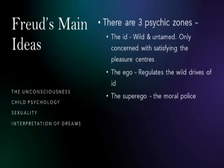Freud's main ideas focused on: the unconscious, child psychology, sexuality, and the interpretation of dreams. According to Freud, in our mind or psyche there are three psychic zones. The id, which is wild and untamed, is only concerned with satisfying the pleasure centers. The ego regulates the wild drives of the id. The superego is the moral police - it tells what is right and wrong and represents an idealistic stage.